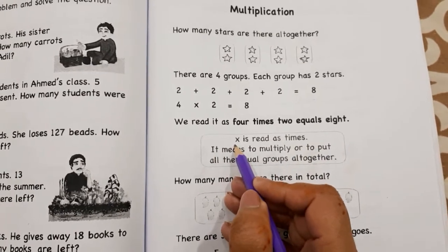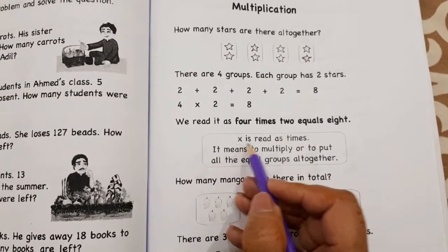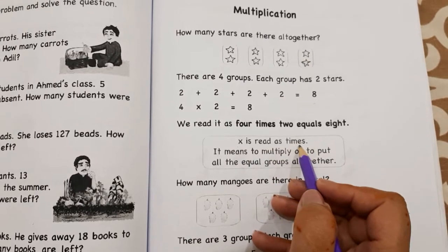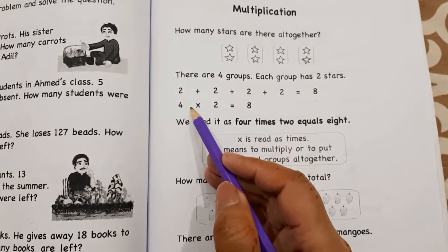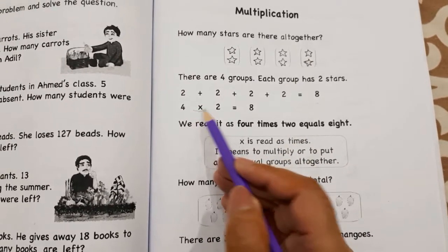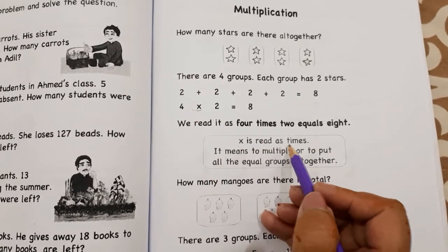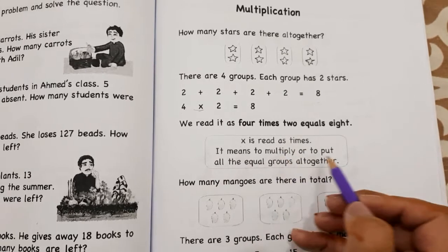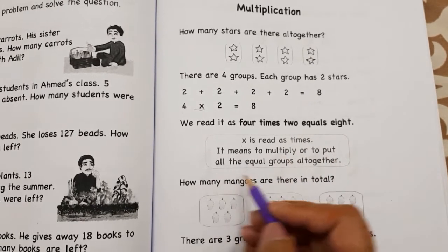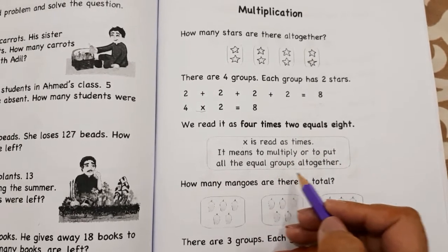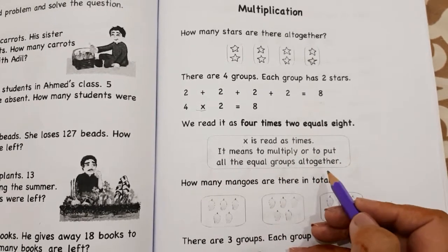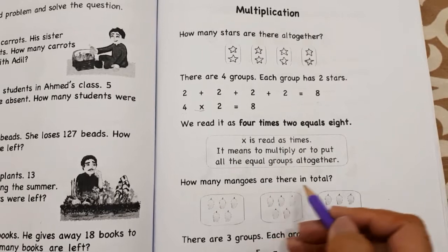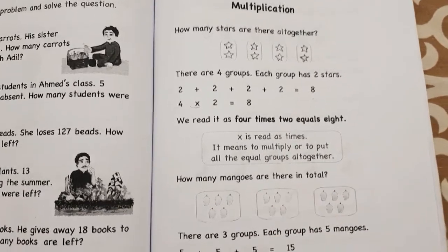The multiply sign is read as 'times.' How do we read it? As 'times.' It means to multiply, or to put all the equal groups all together. How many mangoes are there in total?